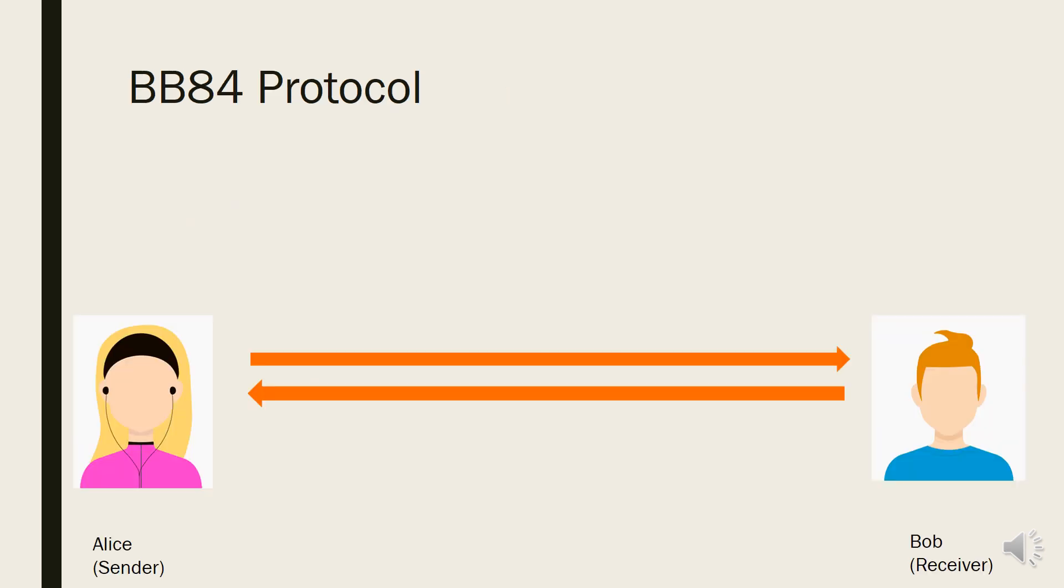BB84 protocol was proposed by Charles Bennett and Gilles Brassard in 1984. It is affirmed to be the most powerful protocol in terms of stability and implementability. We will set sender as Alice and receiver as Bob for simple explanation.